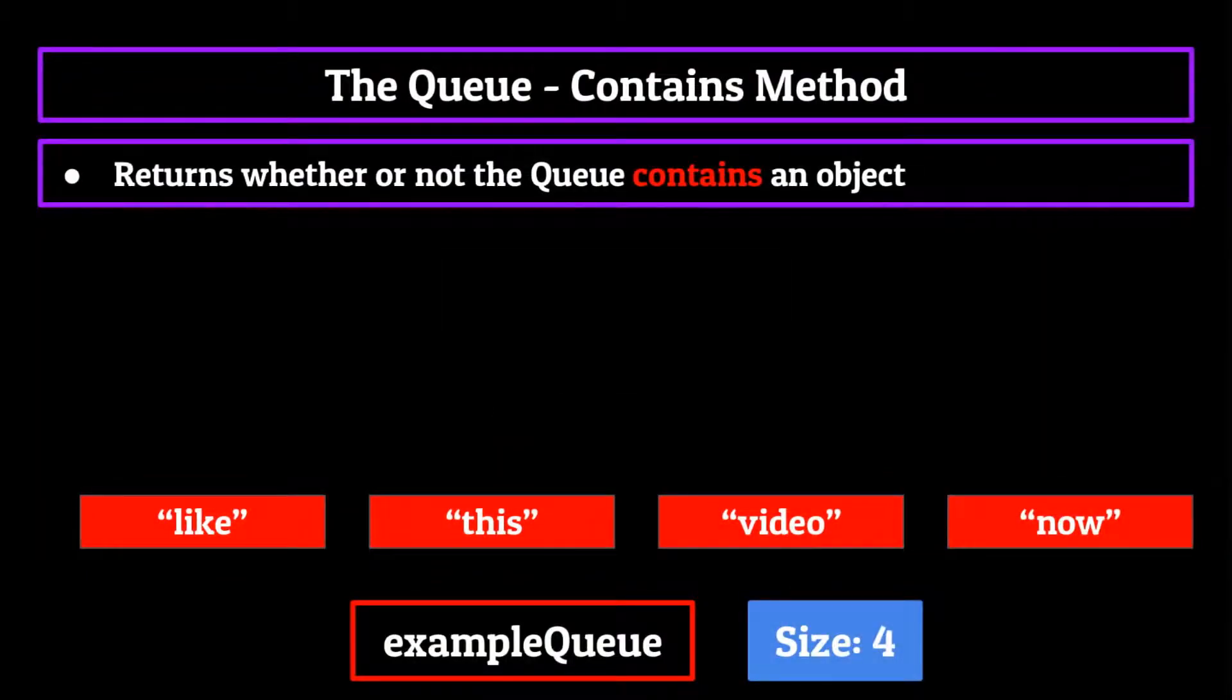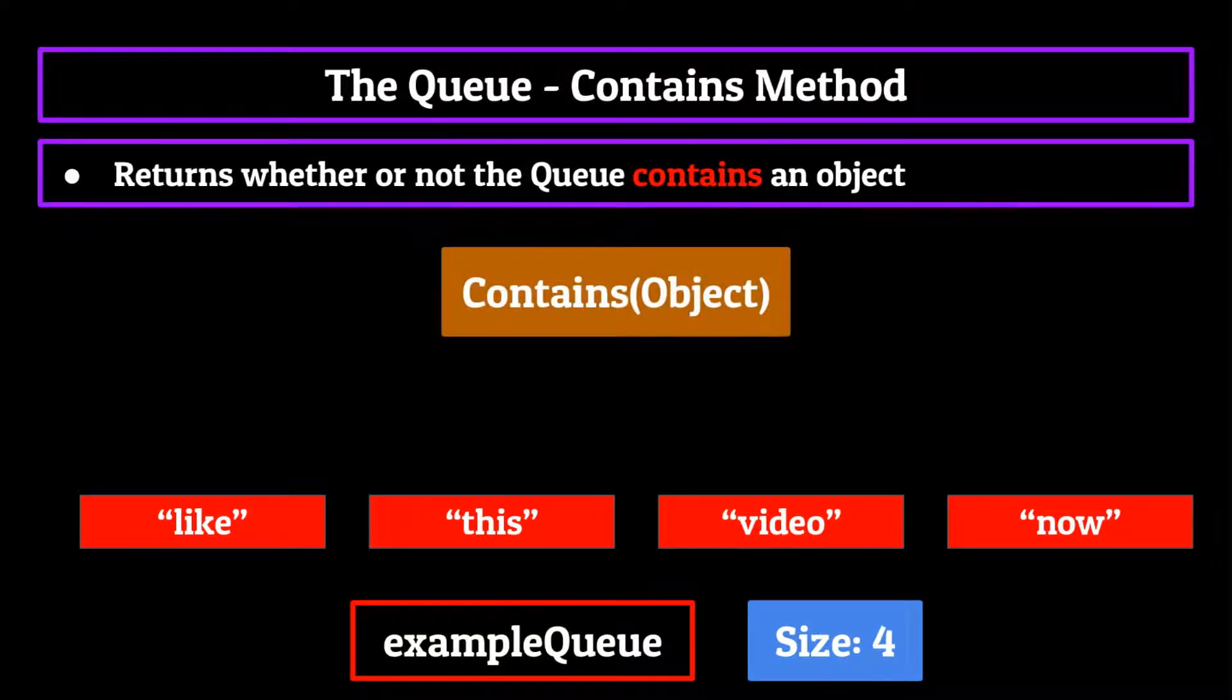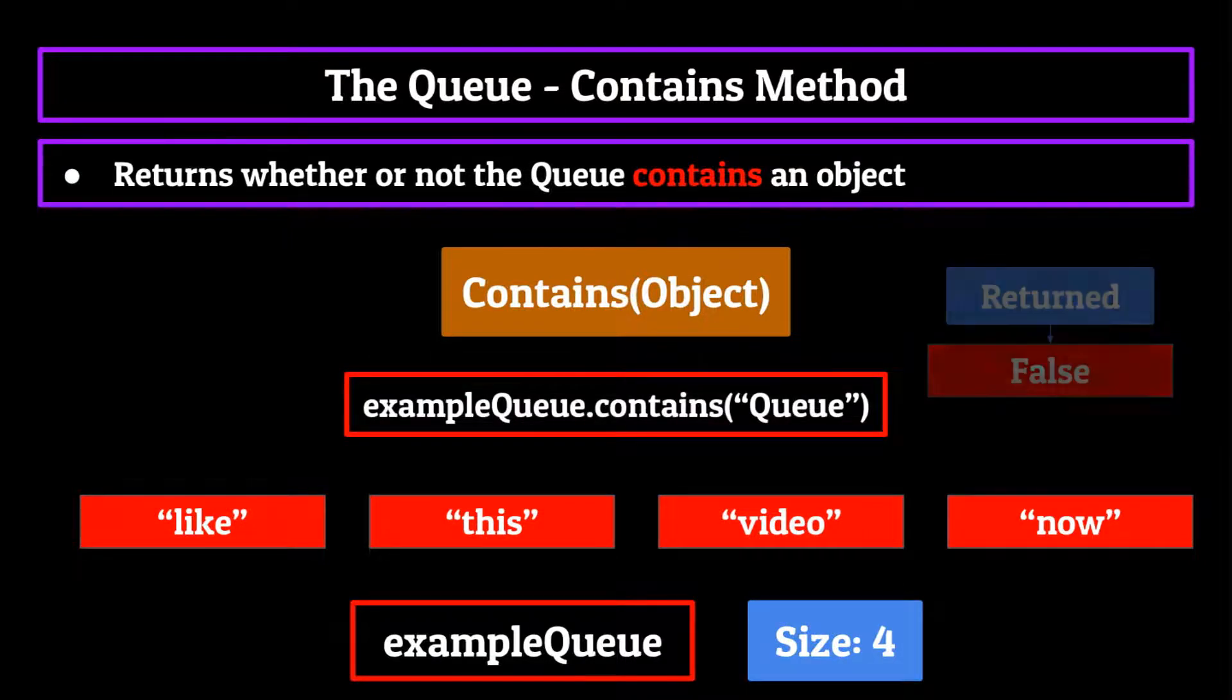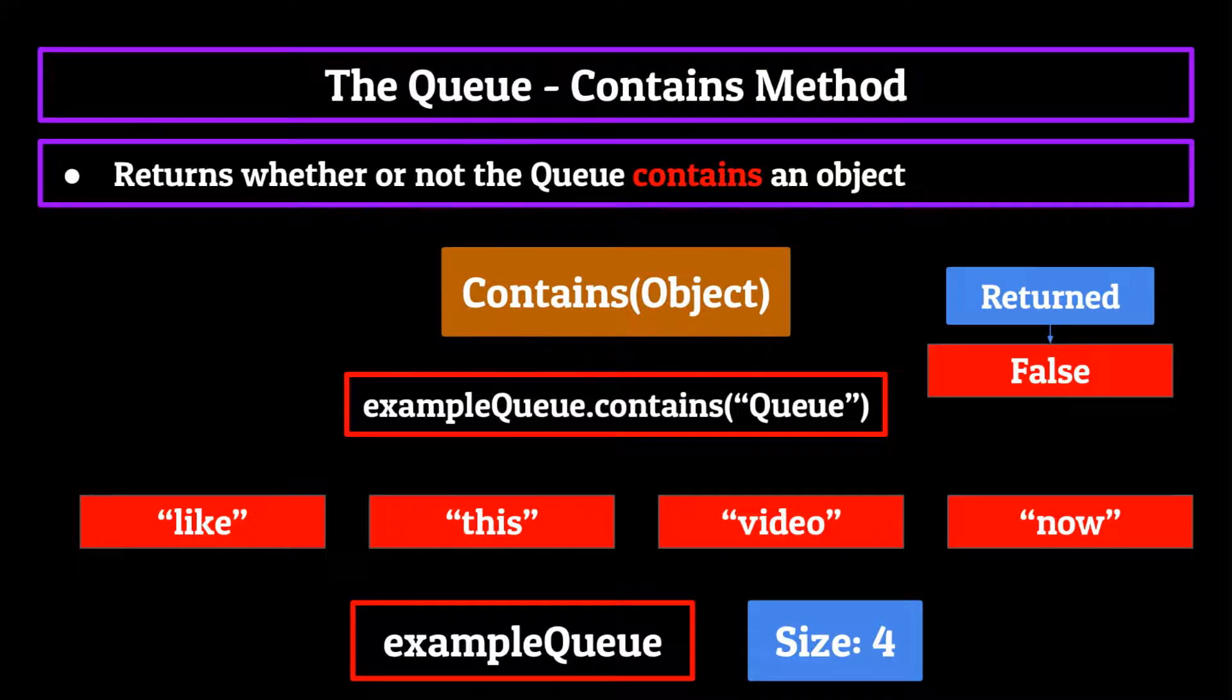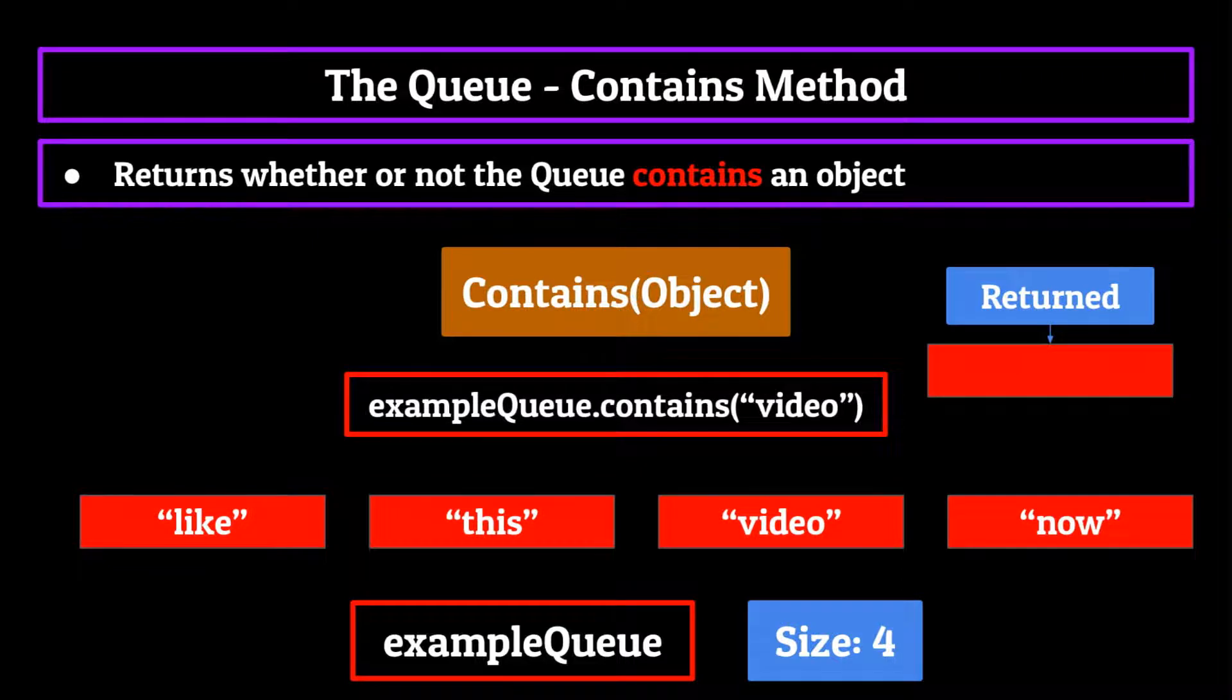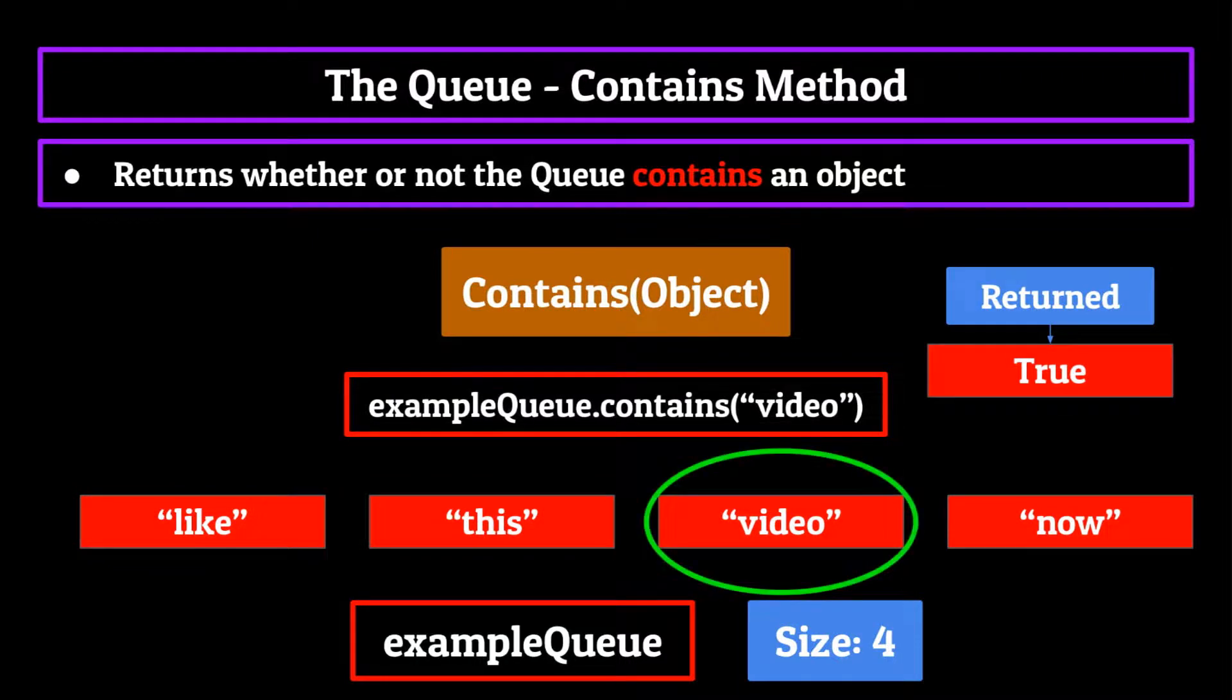The final method we'll cover today for queues is the contains method. The name pretty much says it all. It takes in an object and will return whether or not the queue contains that object. Running it on our example stack with an argument of queue would return false, because as you can tell, there is no queue string in our queue. However, if we ran it on a string like, let's say, video, it'd return true, because as you can see, video is in the queue. Not mind-blowing, but it's definitely important to know if you're going to be using queues.